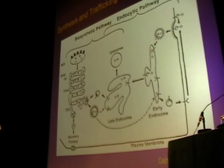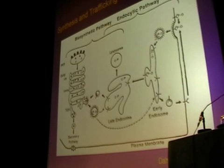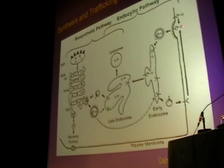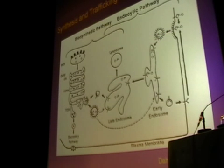Fortunately for us, about 10% of the mannose-6-phosphate receptor is located on the cell surface, and binds to that receptor and is endocytosed and delivered to the lysosome.